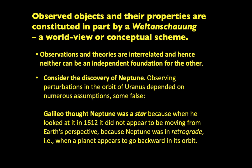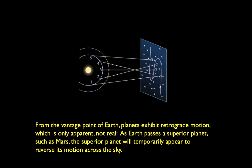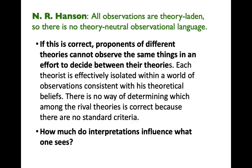Consider the discovery of Neptune. Observing perturbations in the orbit of Uranus depended on numerous assumptions, some false. Galileo thought Neptune was a star, not a planet, because when he looked at it in 1612, it did not appear to be moving from Earth's perspective — because Neptune was in retrograde. That's when a planet appears to be going backwards in its orbit. As Earth passes a superior planet such as Mars, the superior planet will temporarily appear to reverse its motion across the sky. This was not believed to be the behavior of a planet if it's actually orbiting a star.